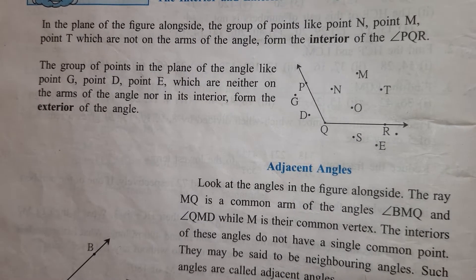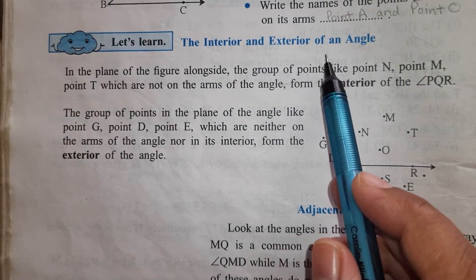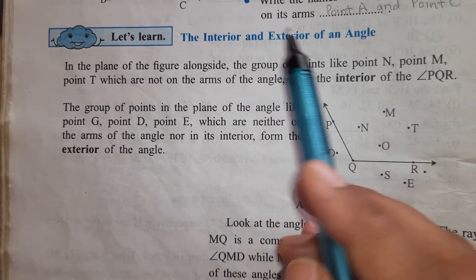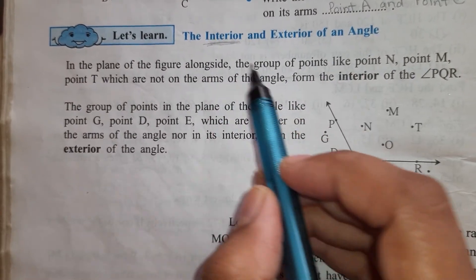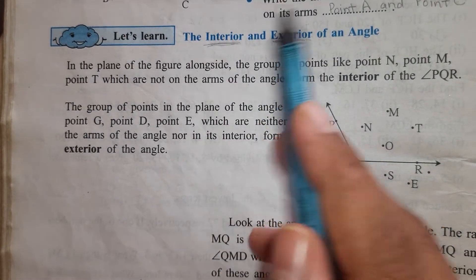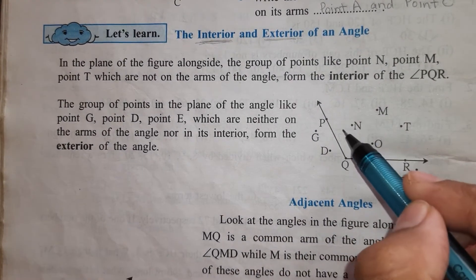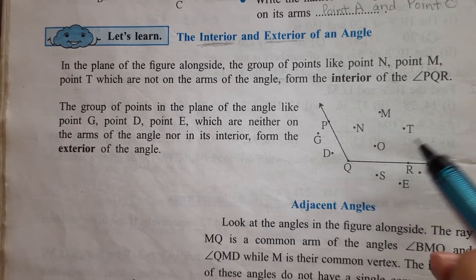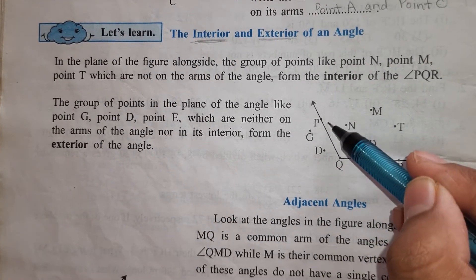Now we will start with our new topic: interior and exterior of an angle. Interior means inside something, and exterior means outside. So interior of an angle means the inside area — the area which lies between the two rays. This portion is called the interior or inside of the angle.